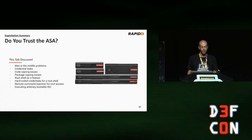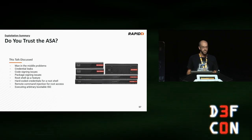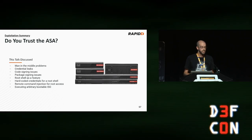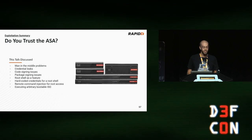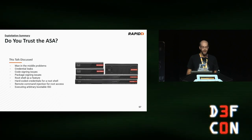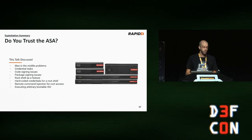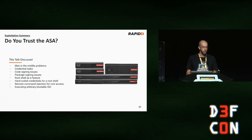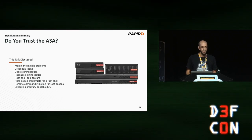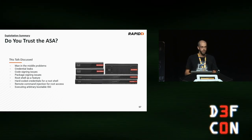That's all the hacks. In this talk we discussed: man-in-the-middle problems, credential leaks, code signing issues, package signing issues, root shell as a feature, hard-coded credentials for root shell, command injection for root access, and executing arbitrary bootable ISOs. Many of these make the ASA a perfect little Trojan horse.